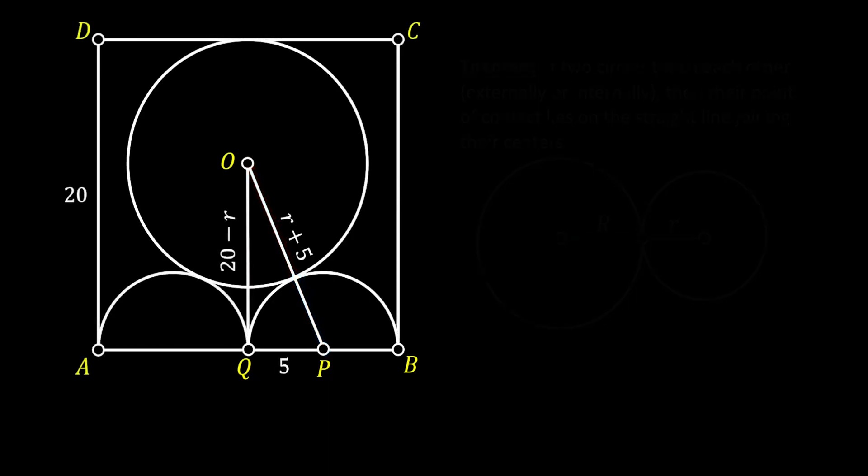Now, let's go back to our original sketch. Let's notice that the line OQ is a vertical line and AB is a horizontal line. This means that the angle at the point Q must be a right angle. We can notice one interesting right angle triangle PQO.